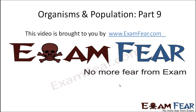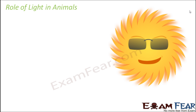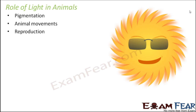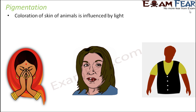Hello friends, this video on organisms and population part 9 is brought to you by examfear.com. Now, not only plants — light also plays an important role in animals. This might sound a little weird because you might think how light directly impacts animals. I will give you instances where light directly affects animals. Some aspects where light plays an important role are pigmentation, animal movements, reproduction, and photoperiodism. Let's discuss each of these one by one.